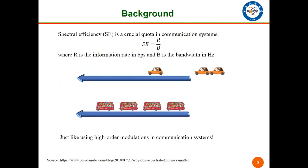Let's begin with the motivation part. Spectral efficiency is a crucial metric in communication systems. It can be represented by R over B, where R is the information rate in bits per second and B is bandwidth in hertz. Improved SE is like using a bus to replace a private car to enhance traffic of the road without increasing lanes. This is like using higher-order modulations in communication systems.